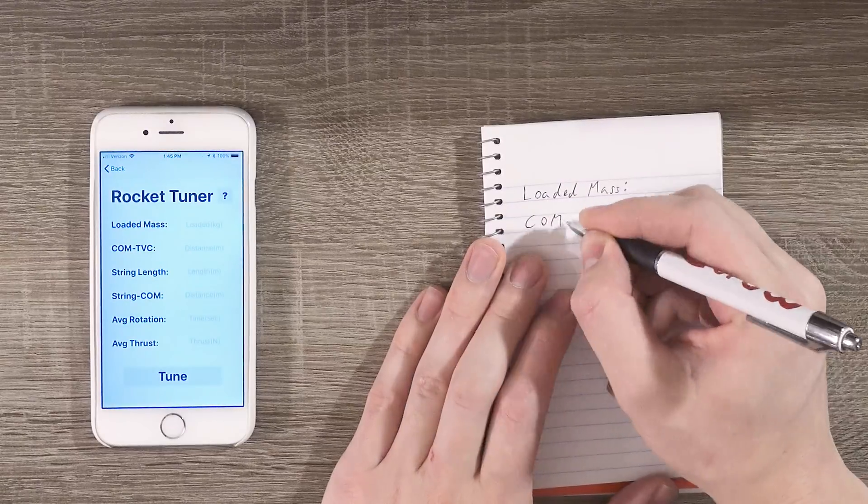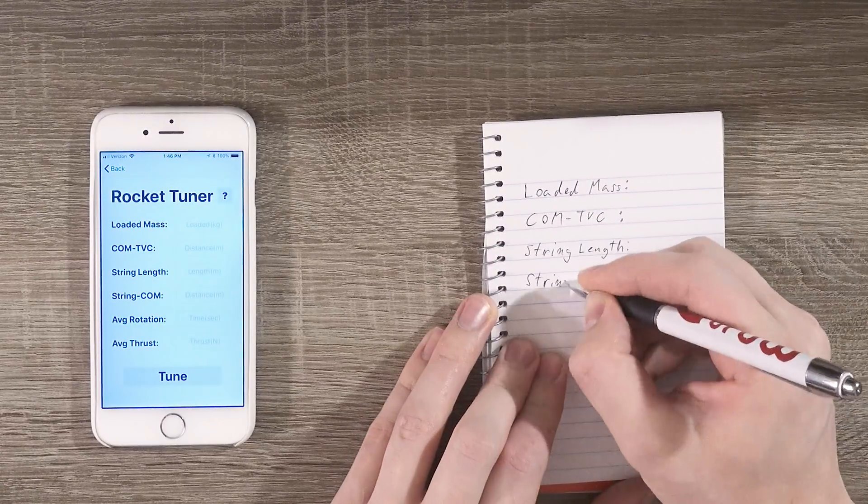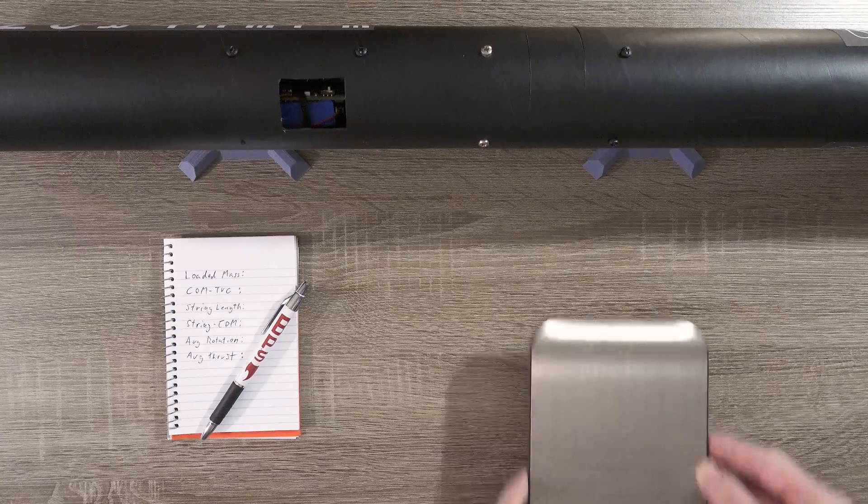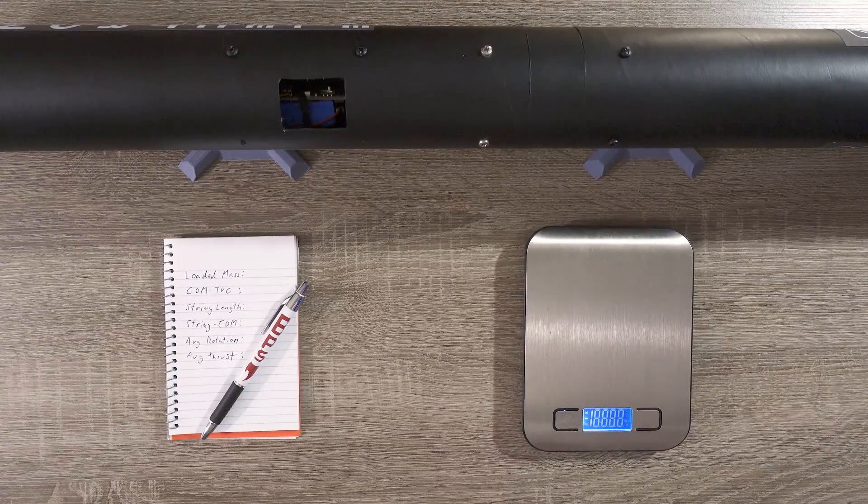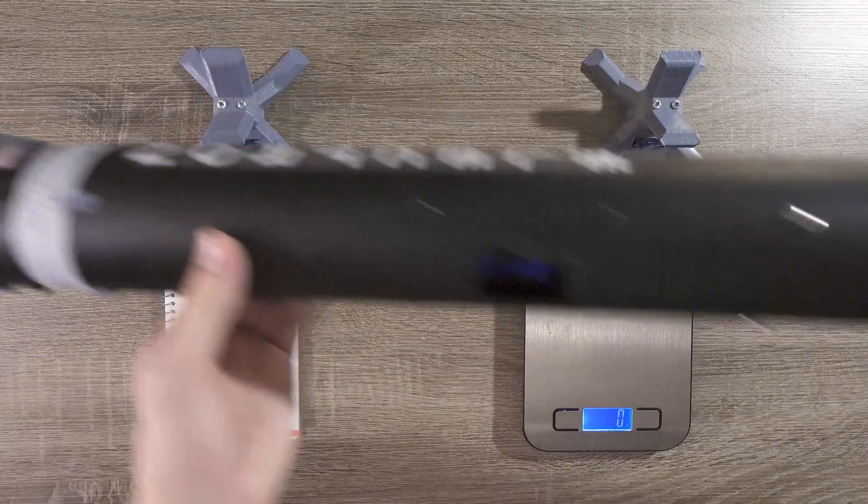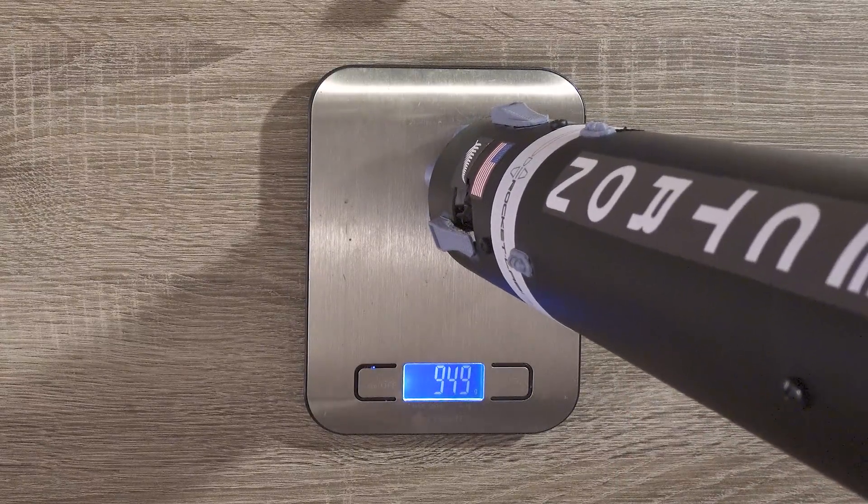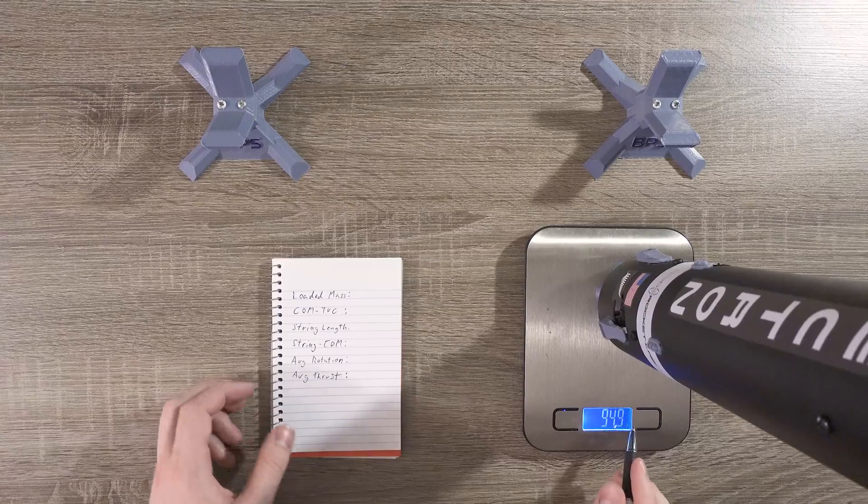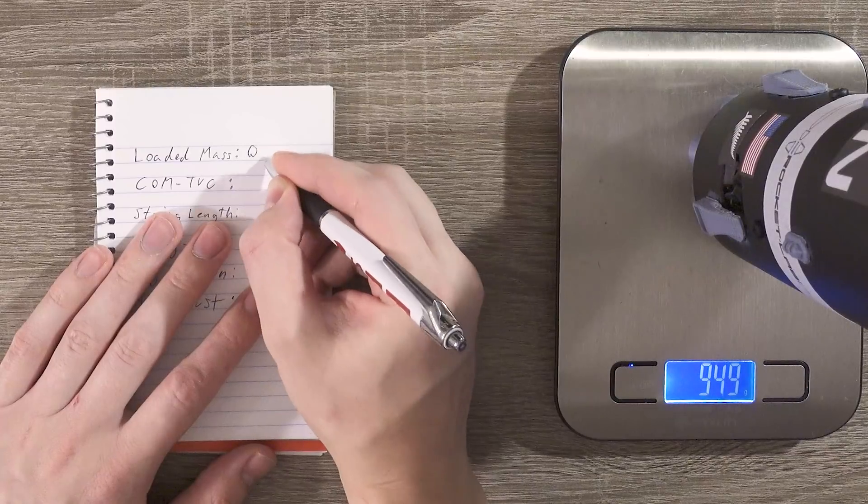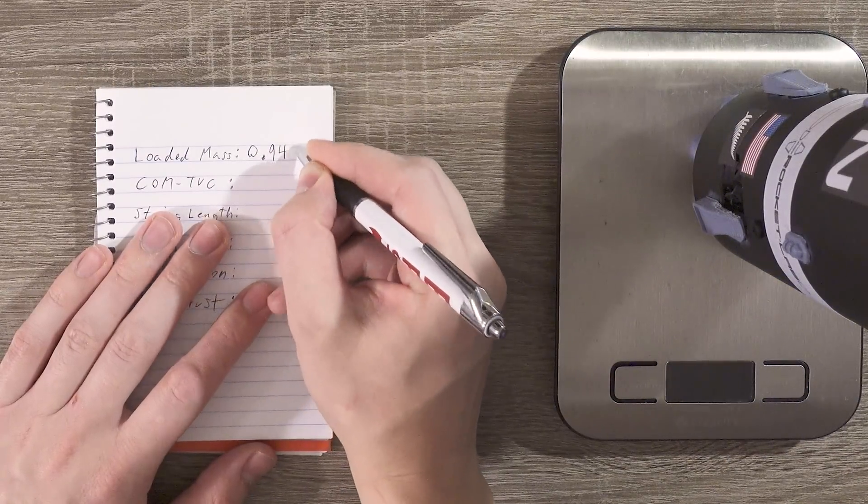For this video, I'll be writing down all of the measurements in this notebook first, then putting them in the app at the end. The first measurement is loaded mass. This is how heavy your rocket will be when it lifts off the pad. We'll be measuring this mass in grams on the scale, but the app expects it in kilograms, so we'll convert the 949 grams to 0.949 kilograms.